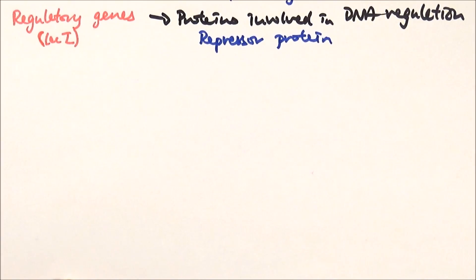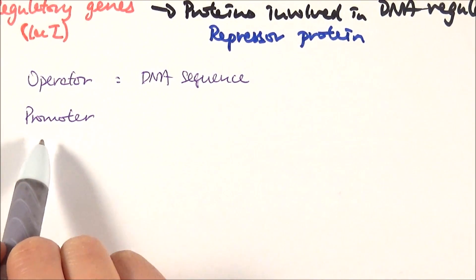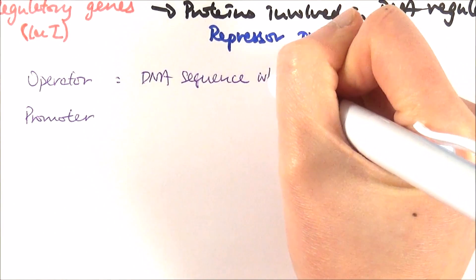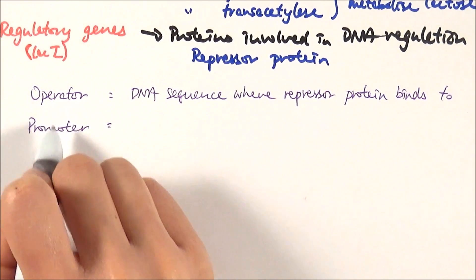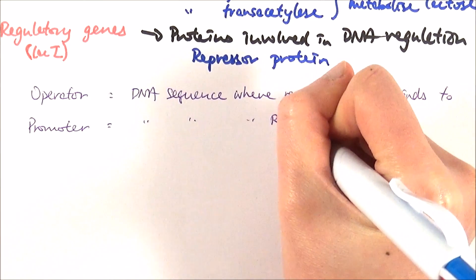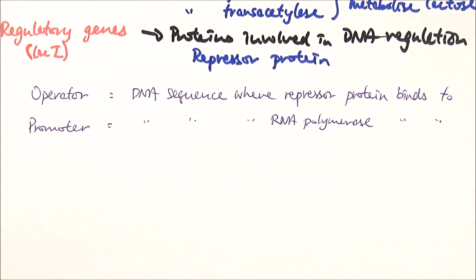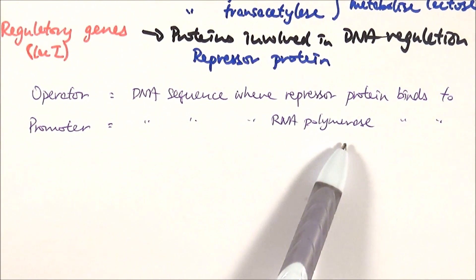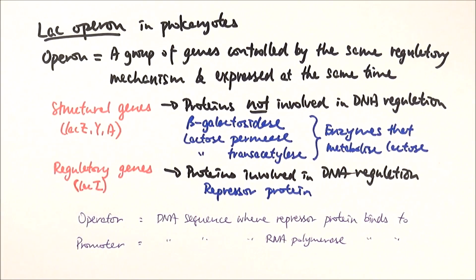There are two more sections within the LAC operon you need to be aware of: the operator and the promoter. The operator is a DNA sequence right next to the promoter, and it is the site on the LAC operon where the repressor protein binds. The promoter, which is right next to the operator, is also a DNA sequence, but this is where RNA polymerase binds. The binding of these two particular proteins — the repressor and RNA polymerase — determines whether transcription can actually happen.